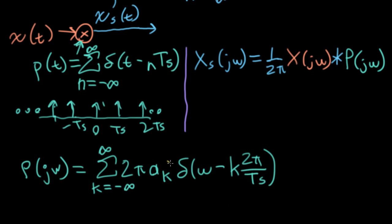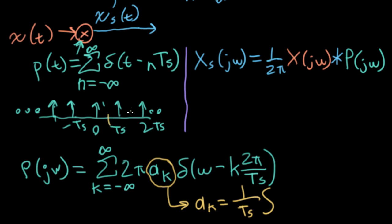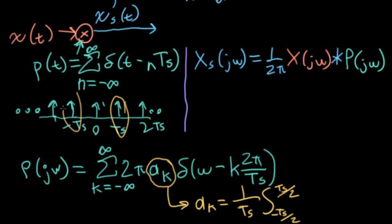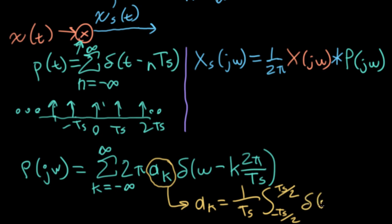I need to find out what these ak are. I'll pull out my Fourier series analysis integral: 1 over the period TS. I can integrate over any period — I could integrate over this period or this period. Let me integrate over the period sitting in the middle, from minus TS over 2 to TS over 2. That avoids having to deal with anything weird on the edge if an impulse happens to land exactly on the edge.